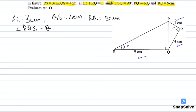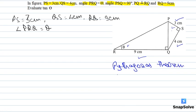If you are aware of the Pythagorean theorem, we can easily solve this question by first finding the length of PQ using triangle PSQ. Applying the Pythagorean theorem: A² + B² = C², meaning the sum of the squares of two sides equals the square of the third side.